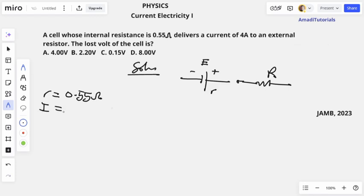So lost volt is the voltage drop due to the internal resistance of this cell.